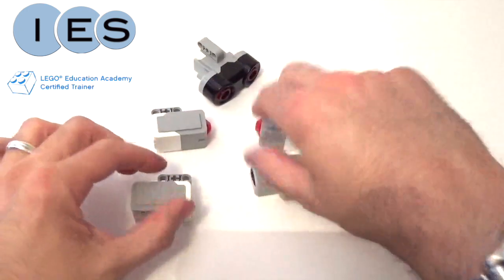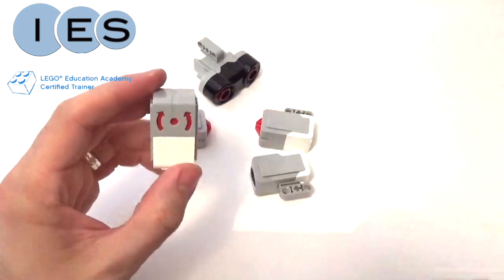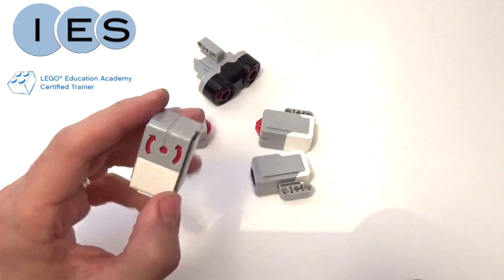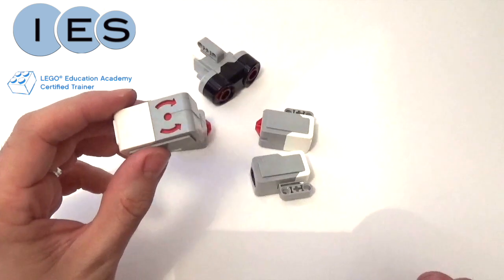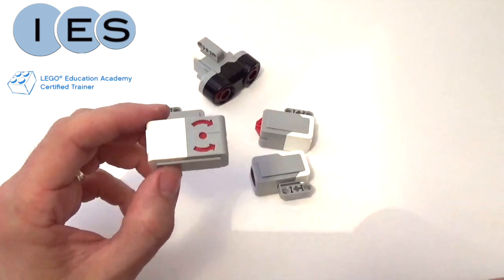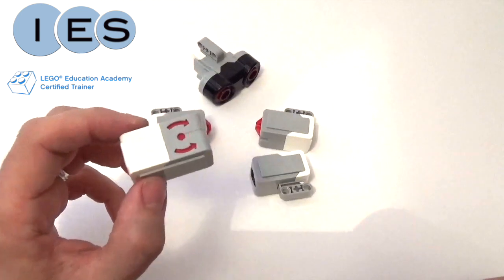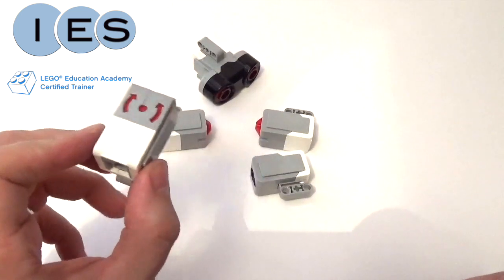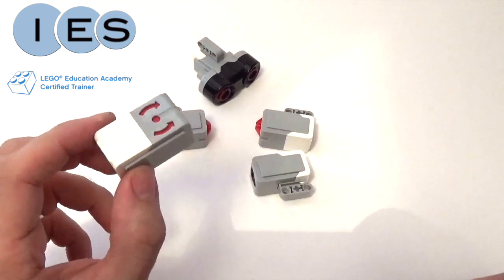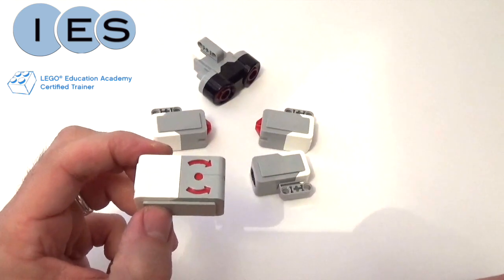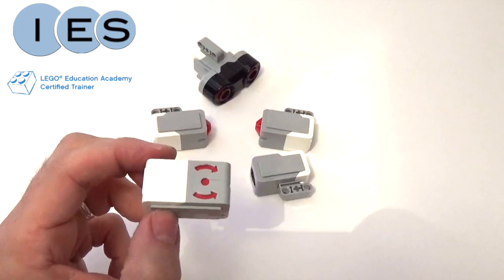And lastly, we have the gyro sensor. This has got some arrows on the top. This is particularly useful if we want to recognize and get our robot that we've built to respond to changes in angle. For example, we could mount that on the top of a wheeled robot, and when it turns a certain amount of degrees, that might trigger a different action.